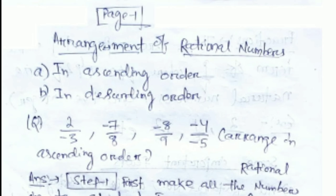Om Shanti, good morning. Today we will discuss the arrangement of rational numbers. If we have more than two rational numbers, there are two methods of arrangement: ascending order and descending order. Ascending order means we arrange from smallest to greatest, and descending order means we arrange from the largest rational number to the smallest.